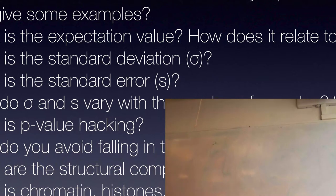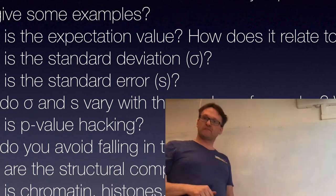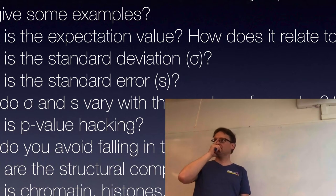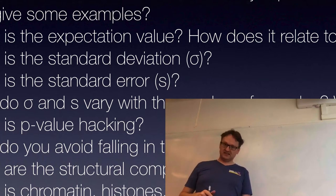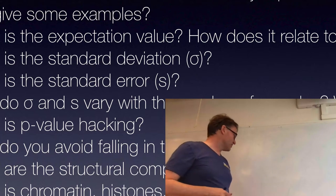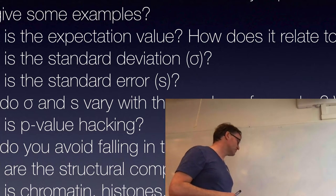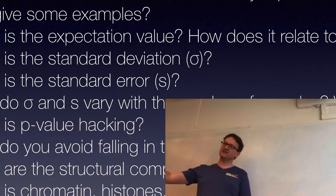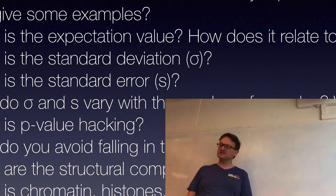With precision, your values are centered in some region, but you are not sure if it is a good region — you are just getting very similar results. Precision really has to be about how repeatable your values are. I might be a lousy shot, but I'm lousy in the same way every single time. I always aim too far to the lower right.